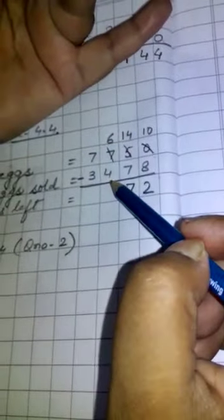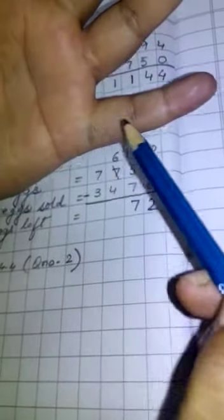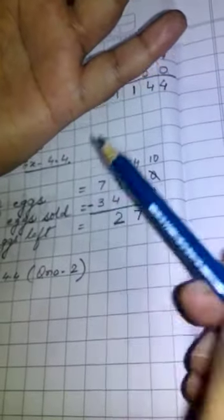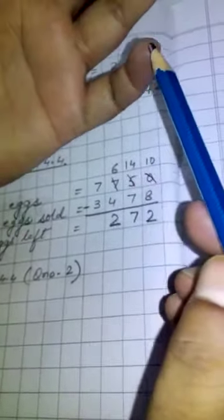Now 6 minus 4. You have to subtract 4 from 6, so what comes after 4? 5, 6. So where you will get 6? In second place. So 2 is your answer. And again what comes after 3? You count it 4, 5, 6, 7. So where you will get 7? In fourth place. So 4 is your answer.